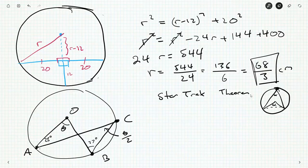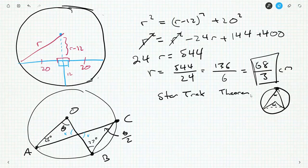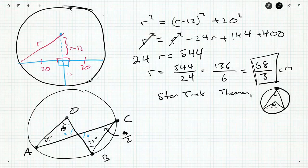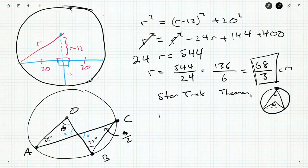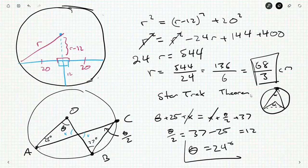But another way we could do this is based on the diagram, we can say, ah, this angle here is this angle here. Because they're opposite angles in a transverse. Or, yeah, transverse lines. So we know that theta plus 25 plus x is the same as x plus theta over 2 plus 37. X's cancel out. We'll get theta over 2 here. And 37 minus 25 over here. But that's just 12. So that tells me my angle here is 24 degrees.